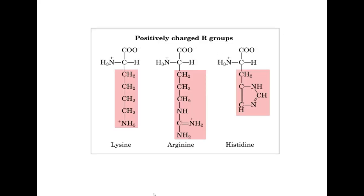All 20 amino acids have different characteristics based on their R-substituents. We can use these different characteristics to classify them. For example, here we have the positively charged R groups. These are amino acids with an extra amino group in their R-substituents, which grants them an overall positive charge. These are lysine, arginine, and histidine.